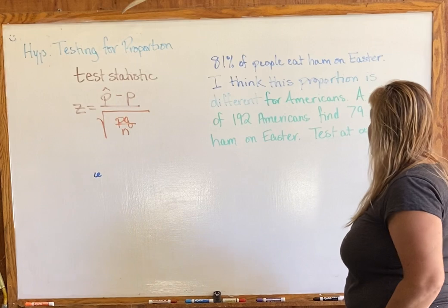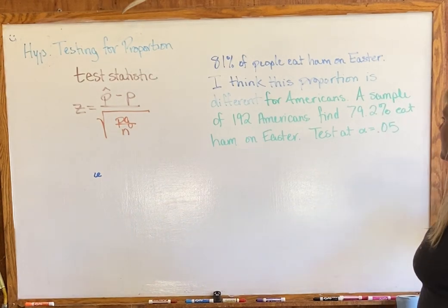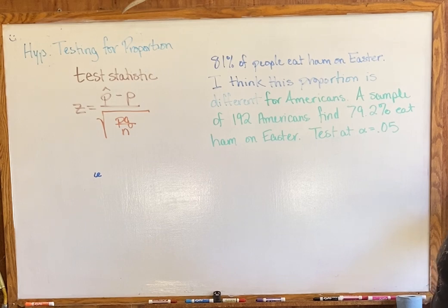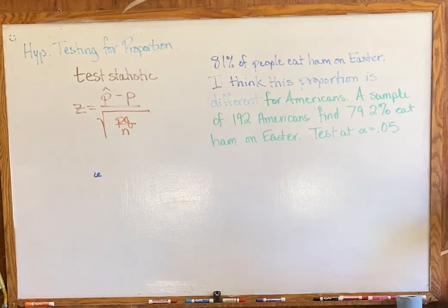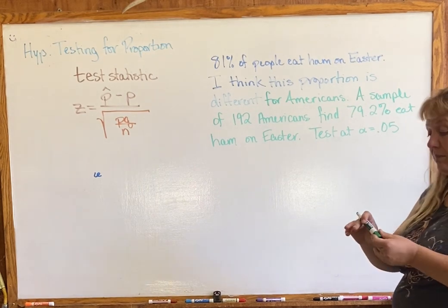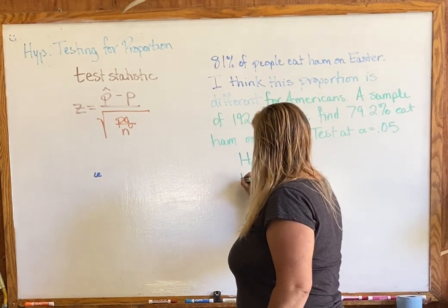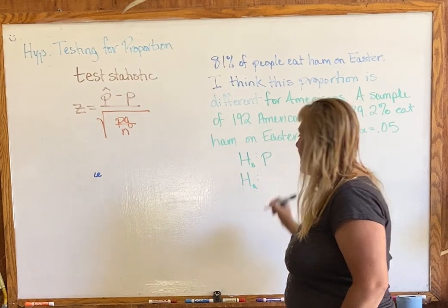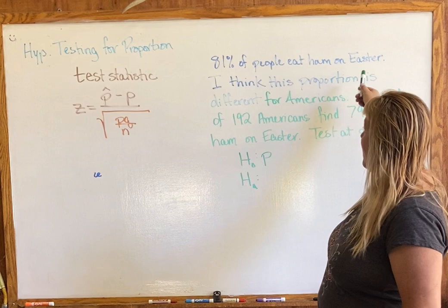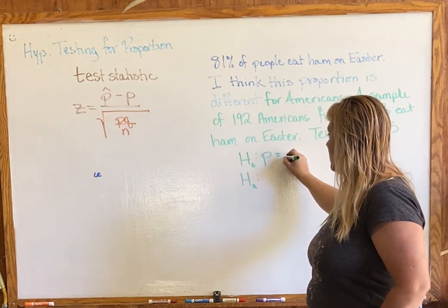Let's read through it again: 81% of people eat ham on Easter in my made-up land. I think this proportion is different for Americans. A sample of 192 Americans finds 79.2% eat ham on Easter. Notice there's no mean and no standard deviation — everything has percentages and proportions. So this is definitely a proportion problem. Our first step is to write our hypotheses. Our null hypothesis: p equals 0.81.